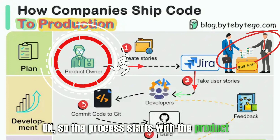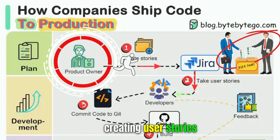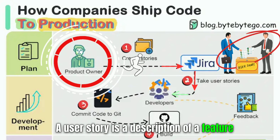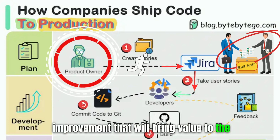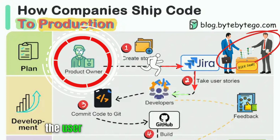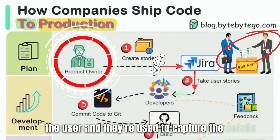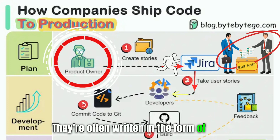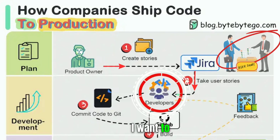The process starts with the product owner creating user stories. A user story is a description of a feature or improvement that will bring value to the end user. They're usually written from the perspective of the user, and they're used to capture the details of a requirement. They're often written in the form of: as a user, I want to...